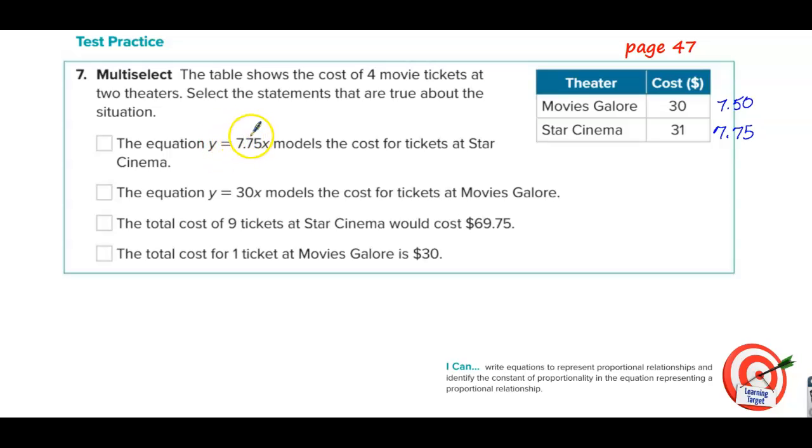So the equation y equals $7.75x models the cost for tickets at Star Cinema. Star Cinema? Yes. The equation y equals $30x models the cost for tickets at Movies Galore. No. This would be if they were charging $30 a ticket. They're not. They're charging $7.50 a ticket. Not that one.